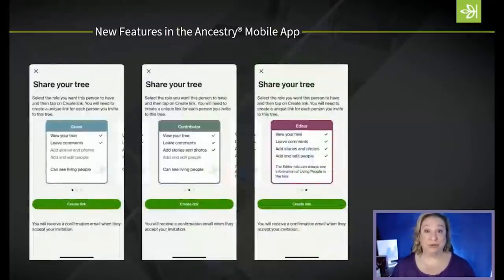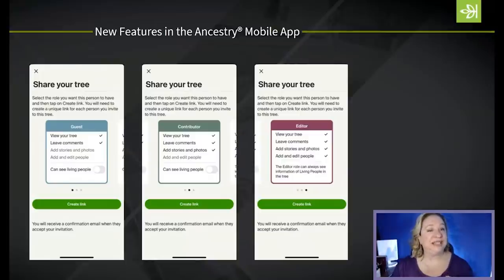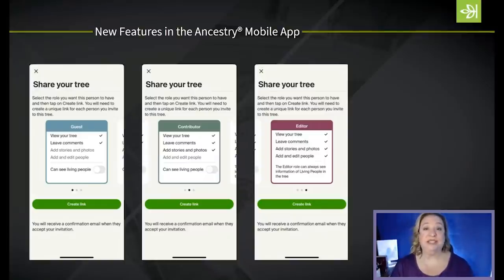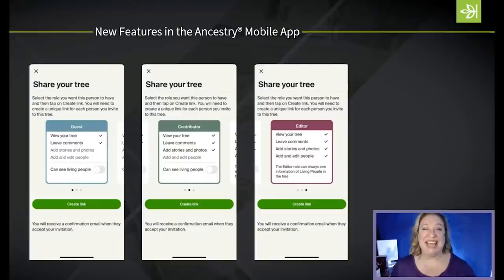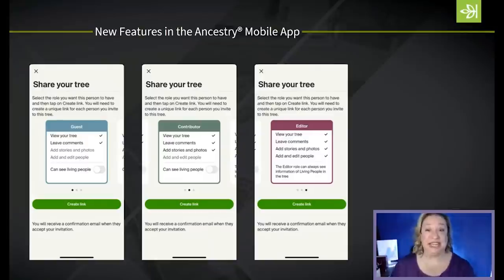Another thing we introduced in the mobile app this last year was tree sharing. Tree sharing has been around on the browser version of Ancestry for a long time, but we wanted mobile app users to be able to share their family tree as well. You have the same three sharing options: you can invite someone to be a guest, a contributor, or an editor. A guest just gets to view your tree — no subscription required. A contributor can upload photos and stories. An editor can do anything in your tree that you can do, so be thoughtful about who you give editor access to.